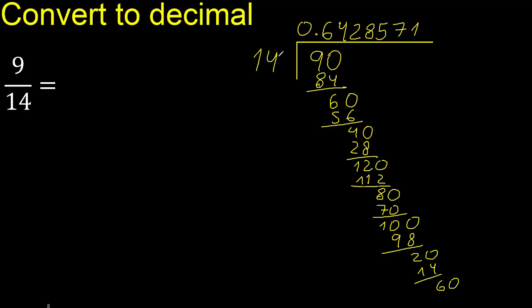We now have 60. 14 multiplied by 4 is 56. We subtract to get 4 and complete. Continuing: we have 40, and so on.